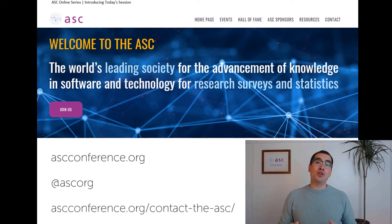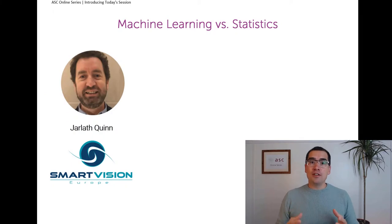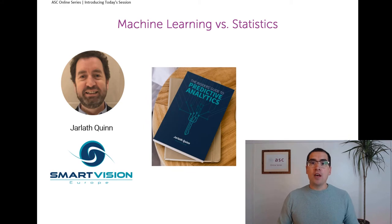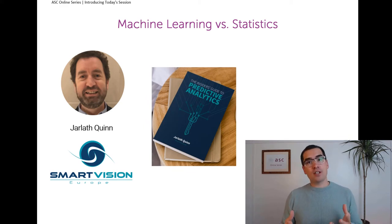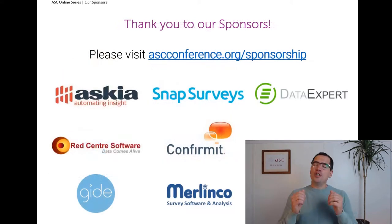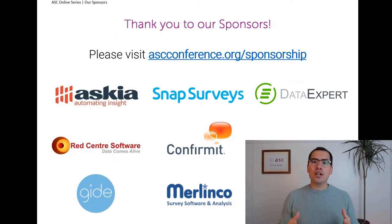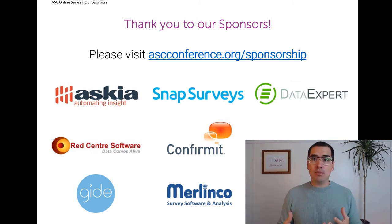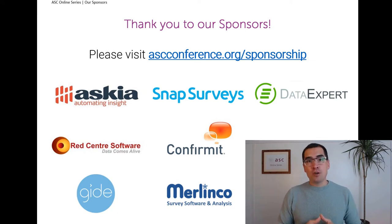Today we're very lucky to be joined by Jarlith Quinn of Smart Vision Europe. Jarlith is a predictive analytics expert, author of the Insider's Guide to Predictive Analytics, and his talk on the topic of statistics versus machine learning sparked so much conversation at the ASC conference that we've asked him back for an encore. A huge thank you to the ASC's sponsors — it's precisely because of their ongoing generosity that the ASC can continue to create a unique blend of knowledge share and events specifically tailored to our sector. Please visit the website for more information on these companies.